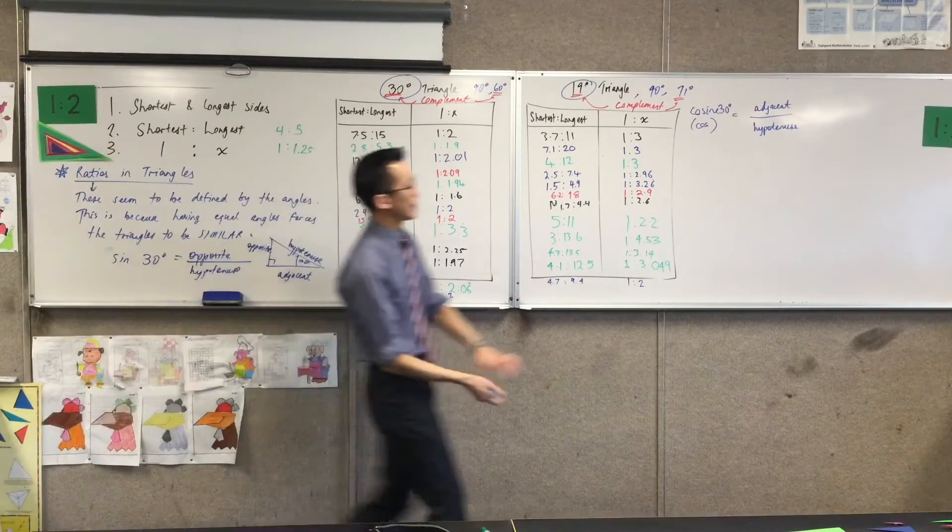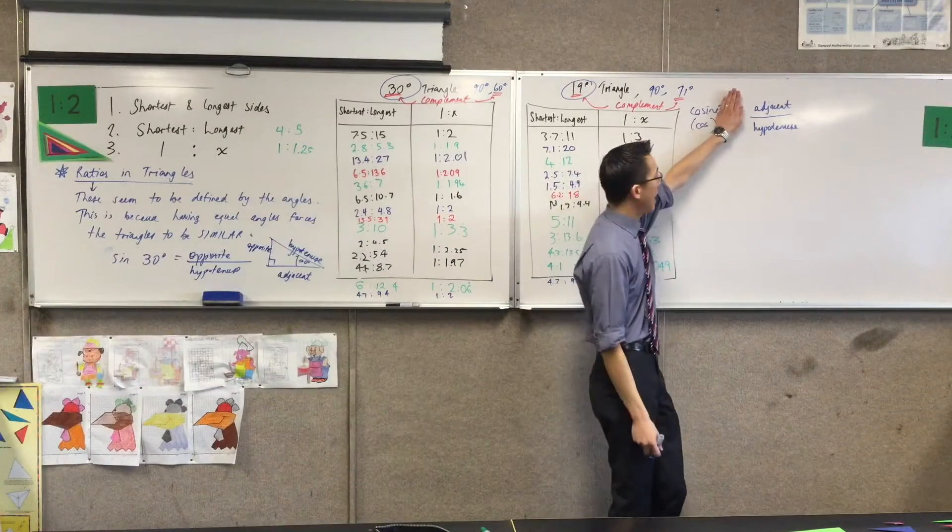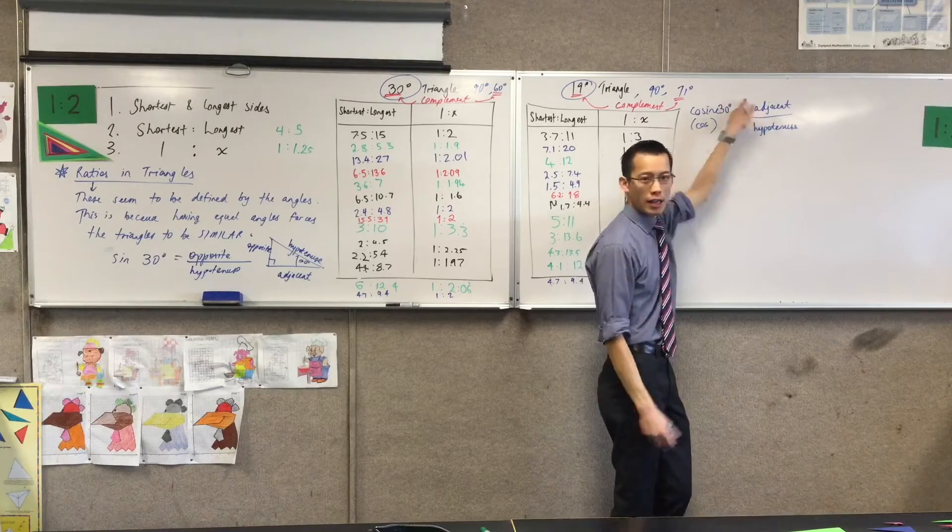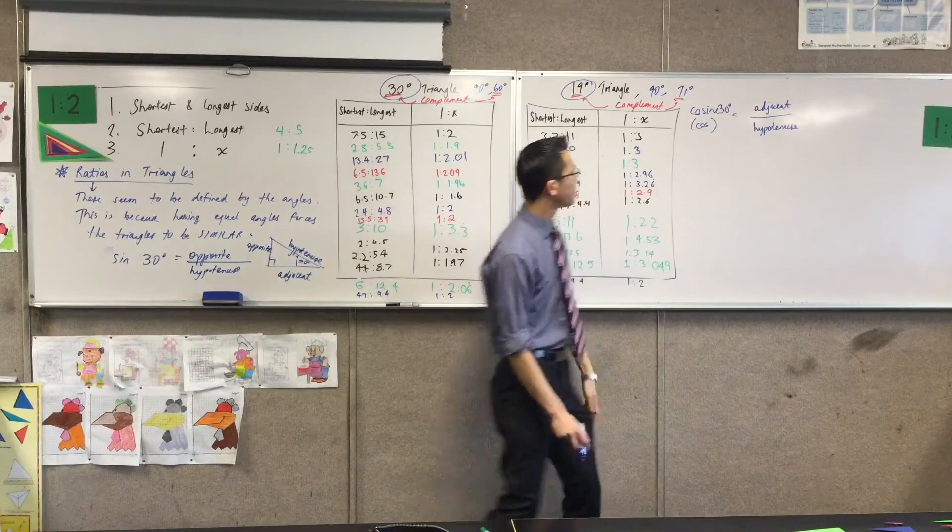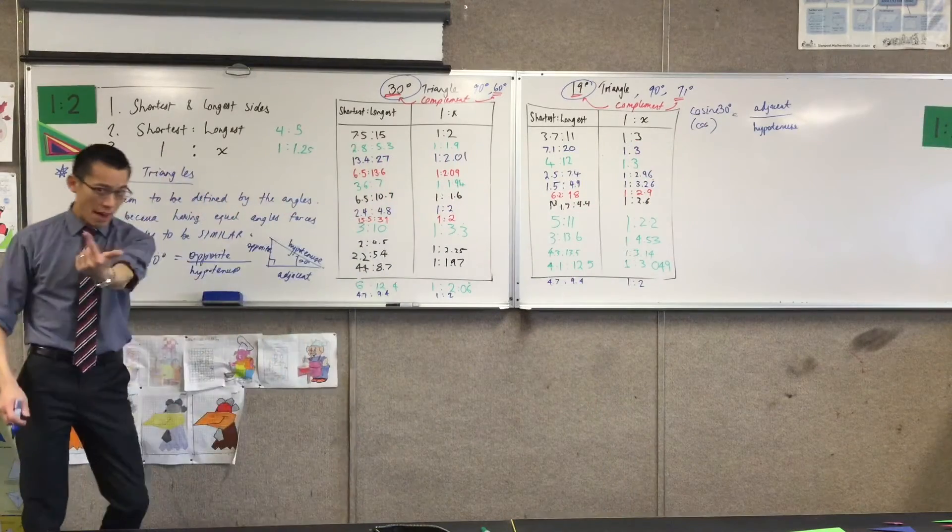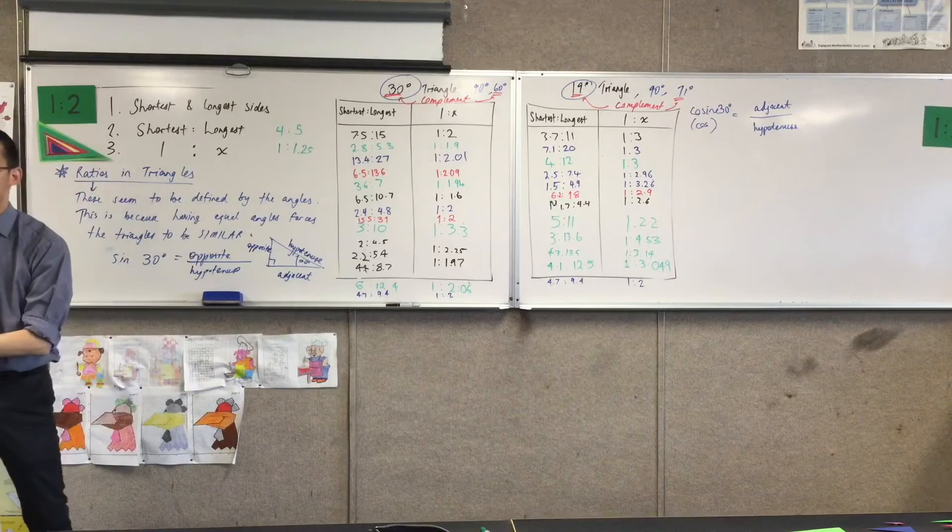Because if you said, like, cosine, and I said, well, that's adjacent to hypotenuse. You'd say adjacent to what? Like, which angle are you talking about? So there has to be an angle in there. I've got the opposite and the hypotenuse. I've got the adjacent and the hypotenuse. There's one more pair I'm missing.